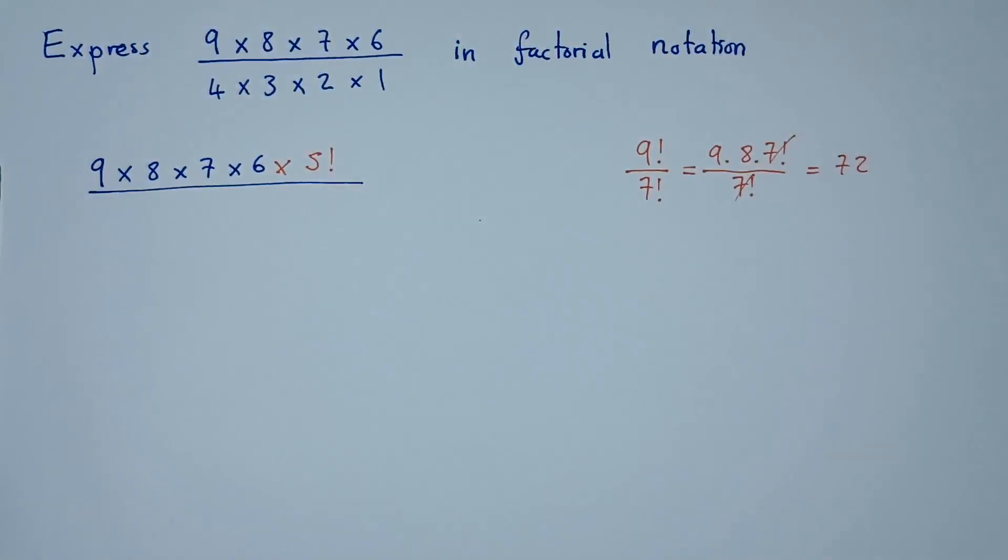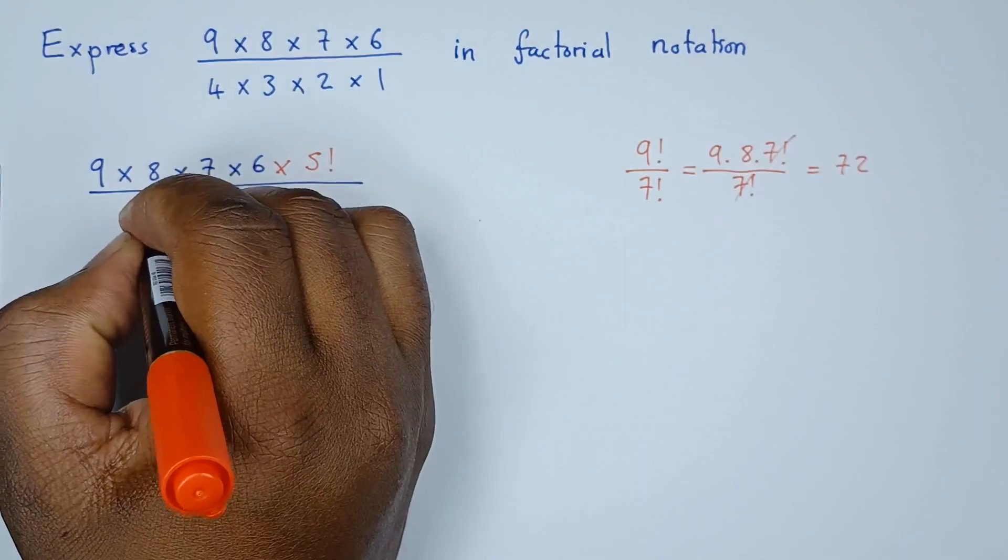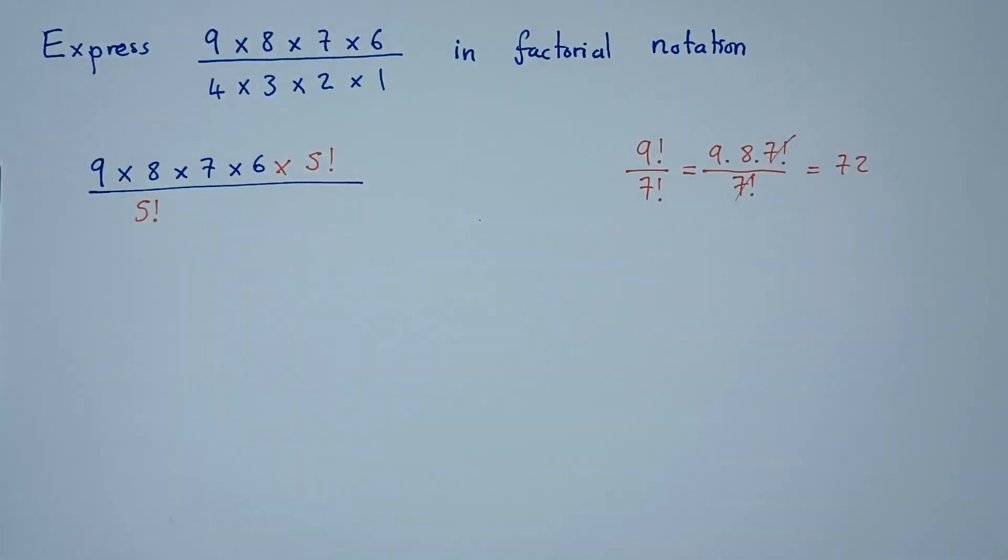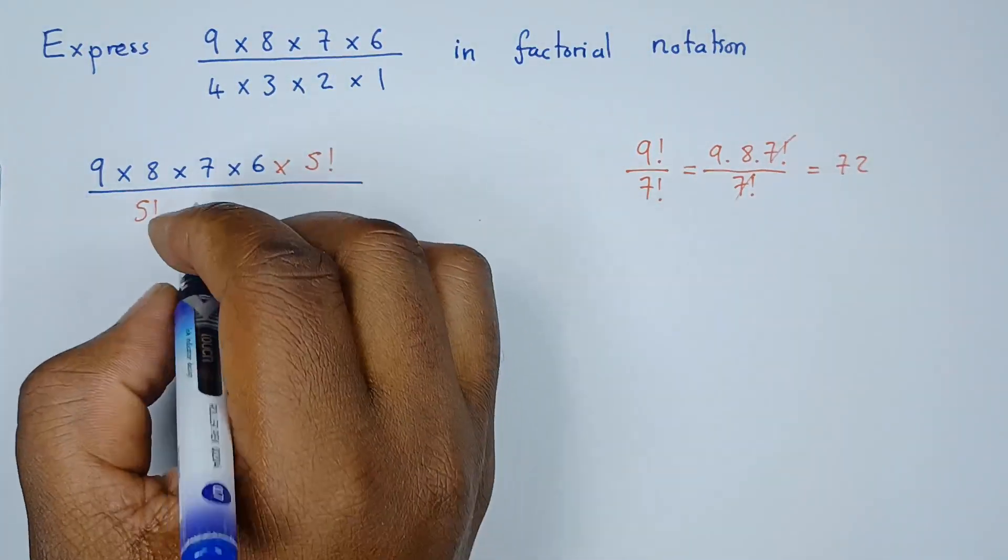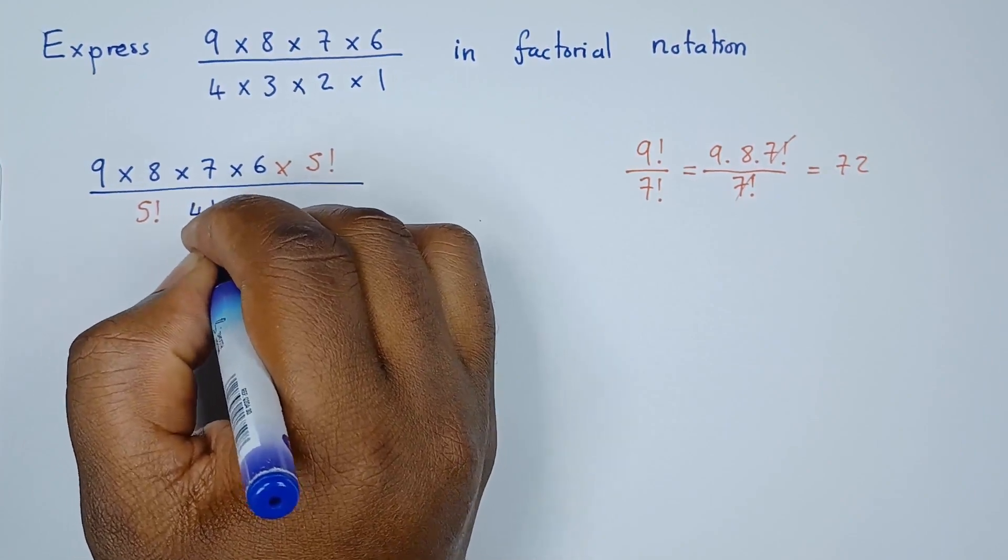That 5 factorial cancelled with this 5 factorial here. Then 4 times 3 times 2 times 1 is the same as 4 factorial.